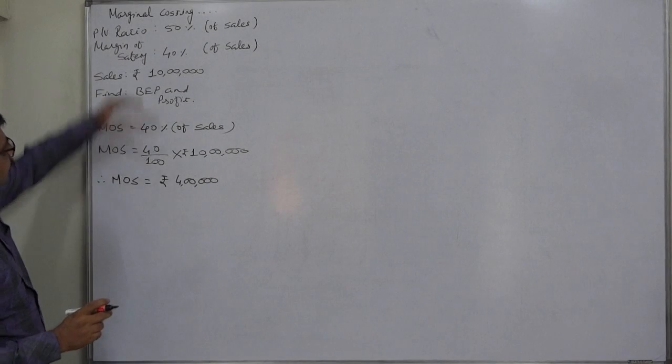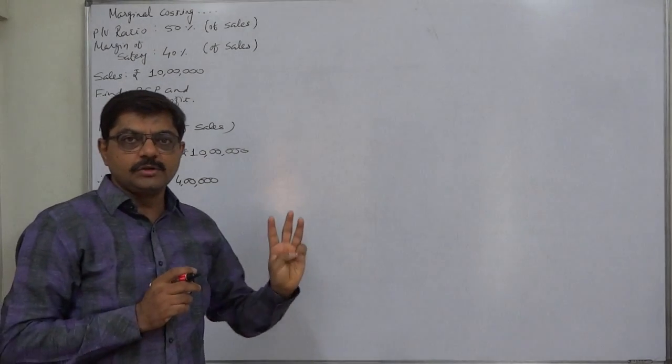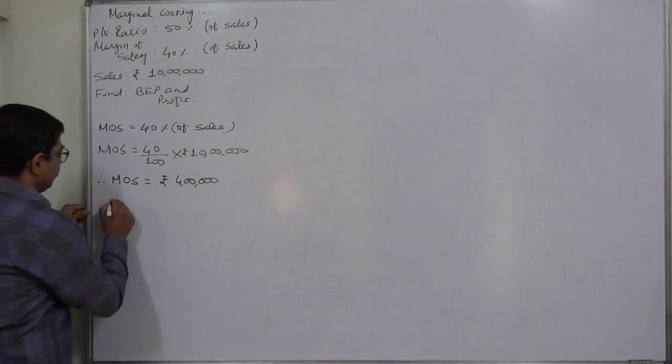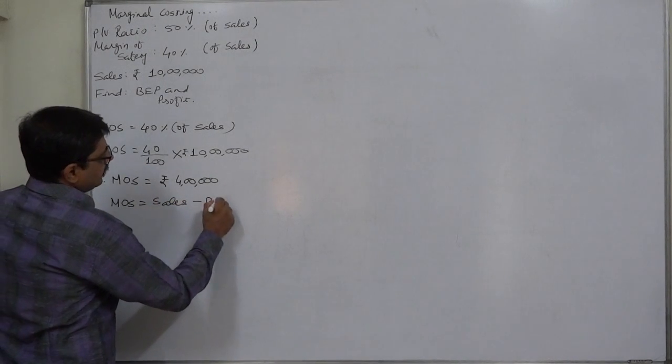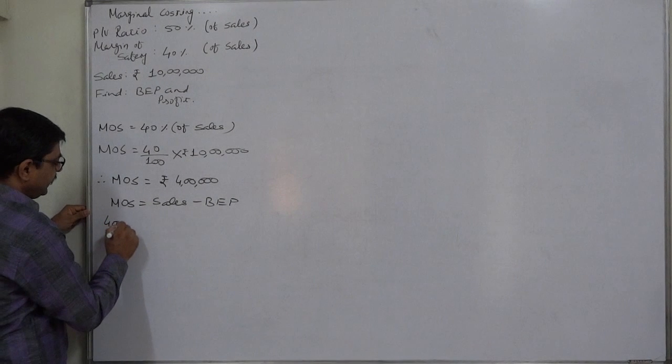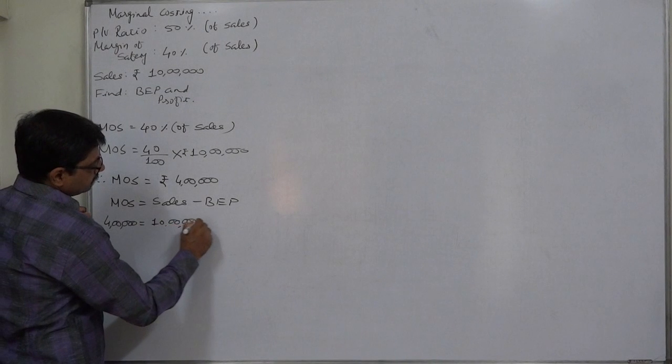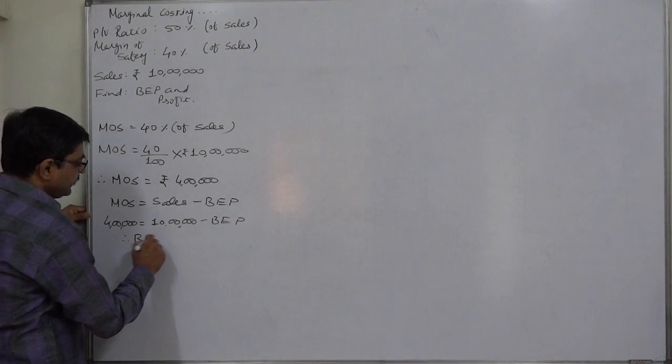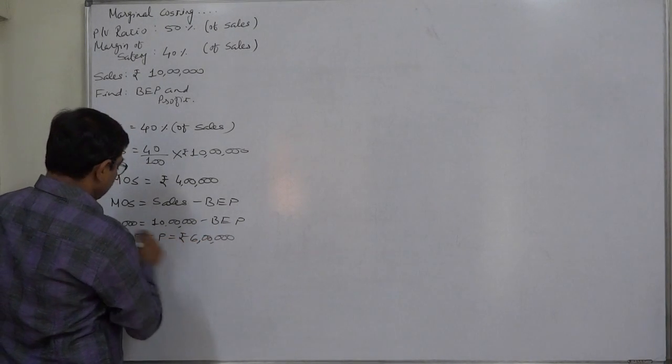Now, we have margin of safety. We have sales and in total there are three components: margin of safety, sales and BEP in the formula of margin of safety. Let us write this formula. See, we have two components: one is margin of safety, 4 lakh or 400,000. Another is sales, 10 lakh or 1 million. The only missing item is BEP that can be found easily.